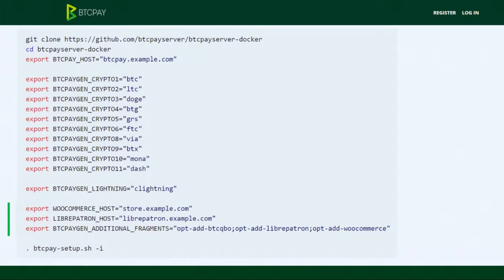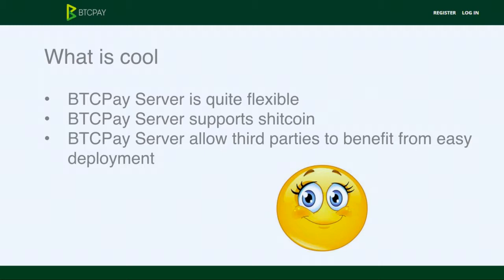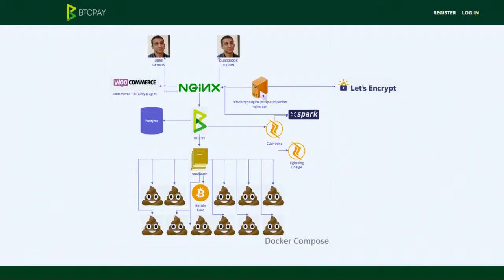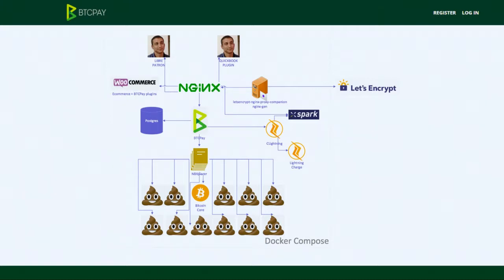Some of you may have seen new projects building upon BTC Pay. For example, LibPatron — kind of like Patreon but for Bitcoin, developed by another developer, Jeff. Same thing: if you want LibPatron, it's one line. If you want to add WooCommerce inside your Docker Compose, it's one line. If you want to add plugins, it's one line as well. Basically, third parties like Jeff can easily build their own plugins on top of it.